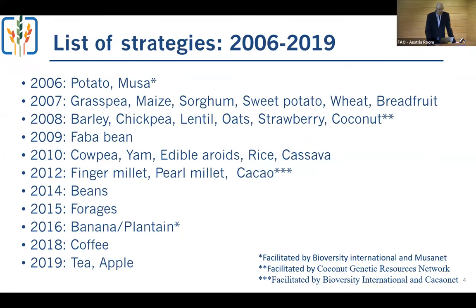Between 2006 and 2019, a number of global crop conservation strategies were facilitated. Many of these were facilitated by the Global Crop Diversity Trust, but not all of them. The Crop Trust has started working on the strategies since the very beginning of its creation in 2004, as it is considered an important way to identify key gene banks for future work and for funding.